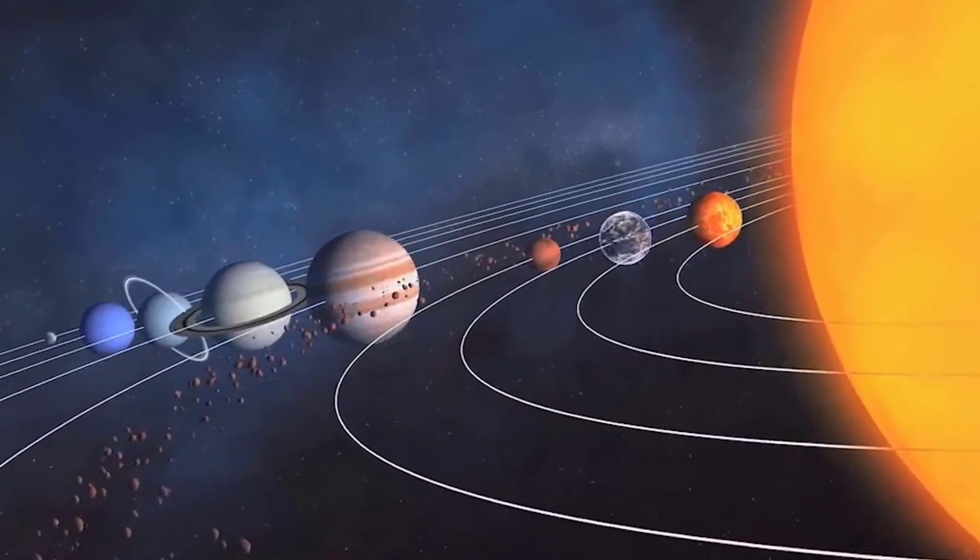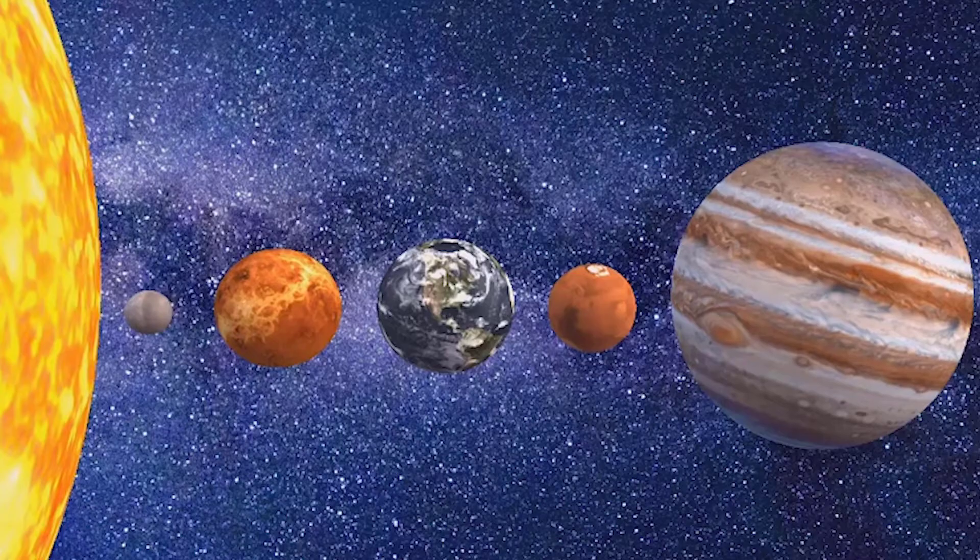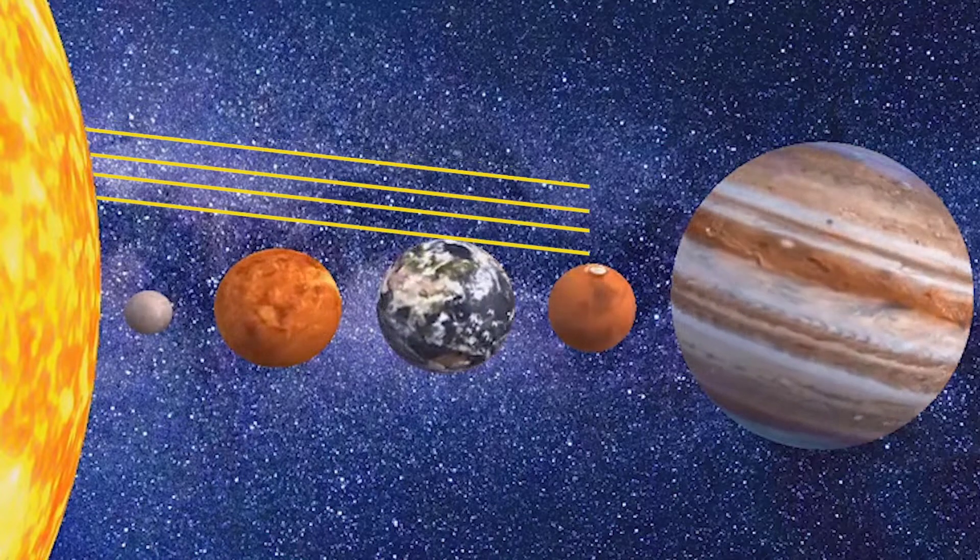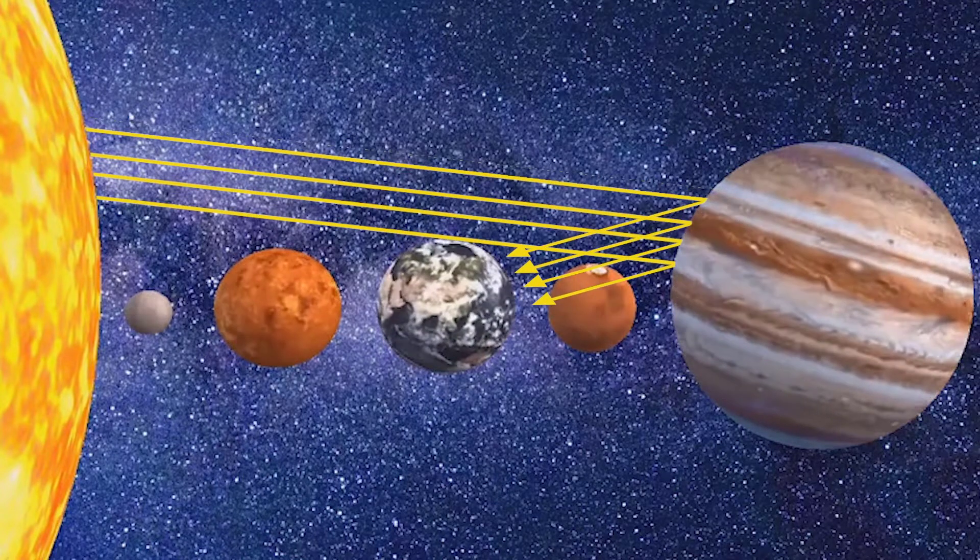For example, Jupiter, which is about 33 light minutes away from Earth, would be visible for over an hour, about the time it would take for the last rays of sunlight to reach it and reflect back to Earth.